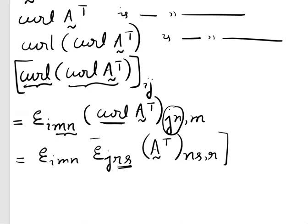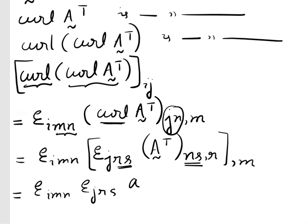S comma R, close the bracket, comma M. Now, if A_ij are components of tensor A, then A_ji are components of its transpose. So A transpose with indices N and S becomes A_SN. Differentiation is with respect to R and with respect to M, so I write them together as comma R M.